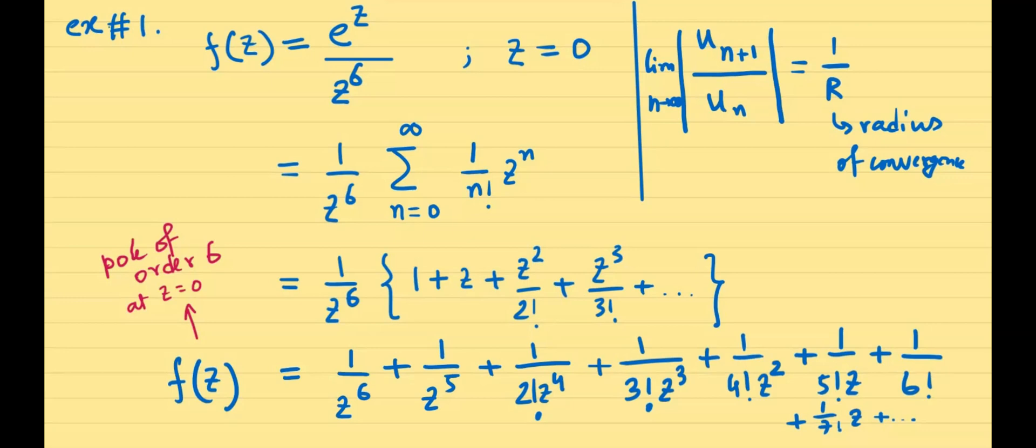The final thing that I'd like to ask you about this series is what is the residue of this series. The residue is the coefficient of one over z, which in this case, residue a minus one is one over five factorial. So these are the two important questions. Number one, the nature of the singularity, which is the order of the pole. In this case, it is six. And the residue, which in this case is one over five factorial. This video ends here. I'll see you in the next video with more examples.